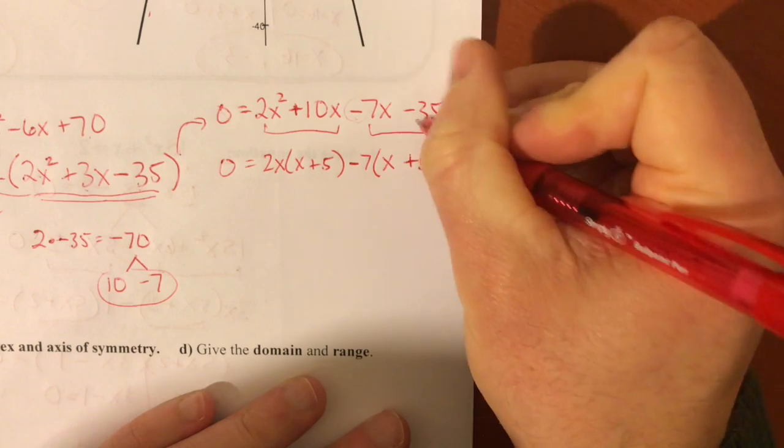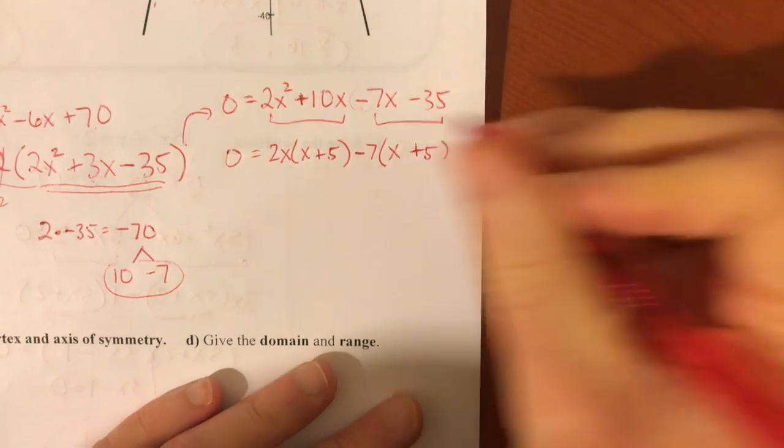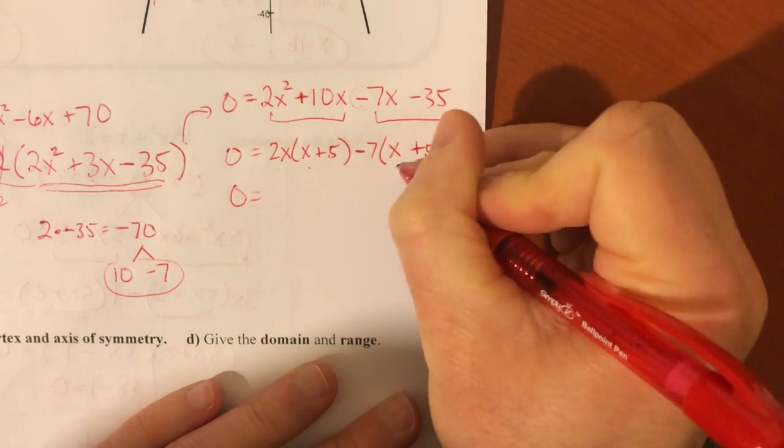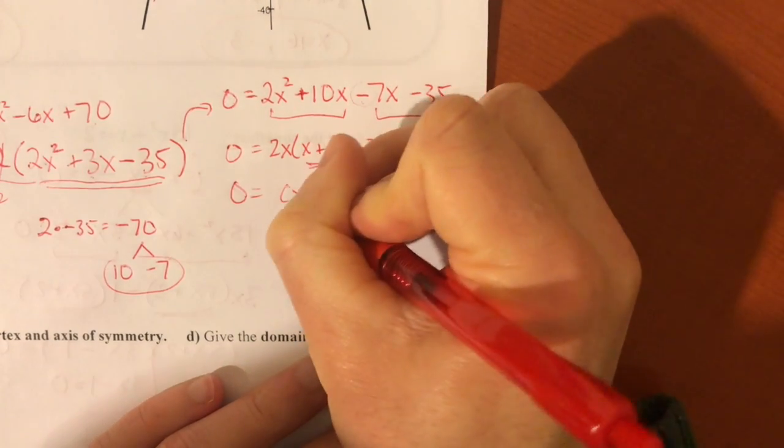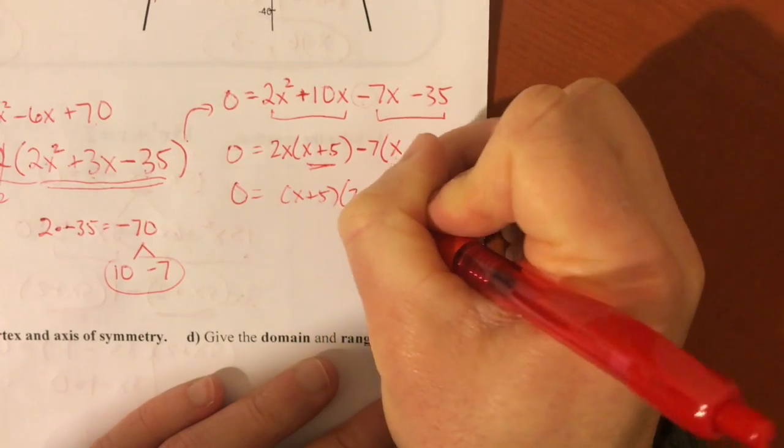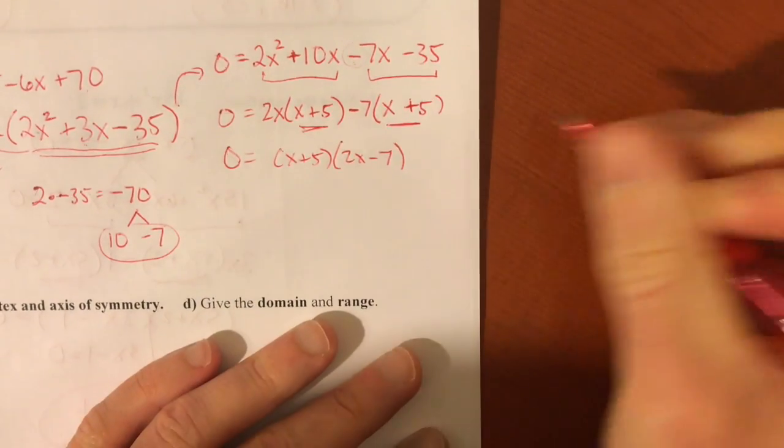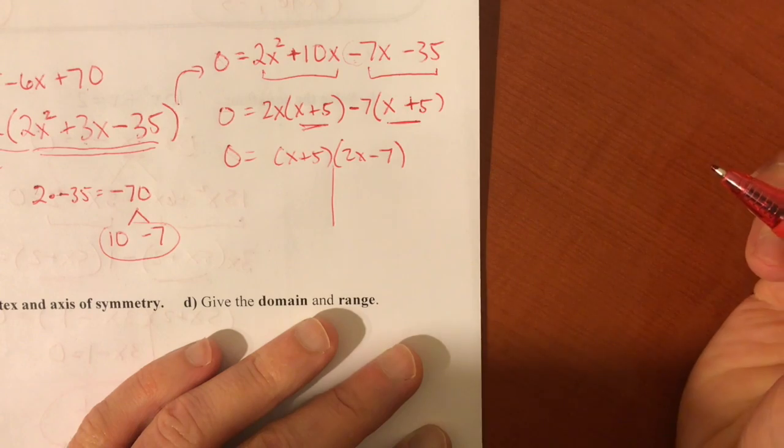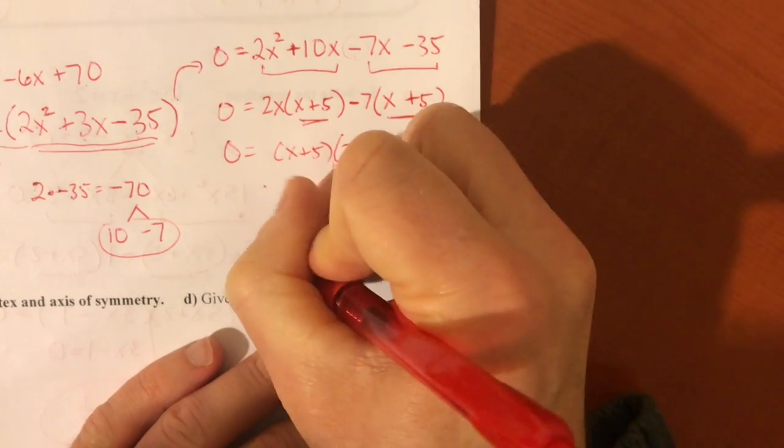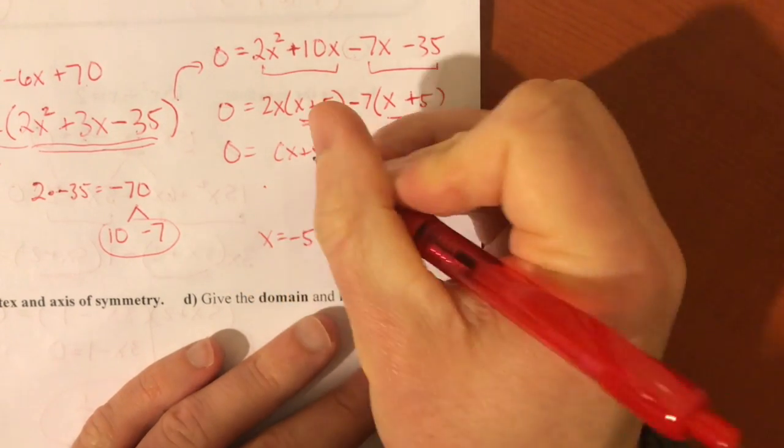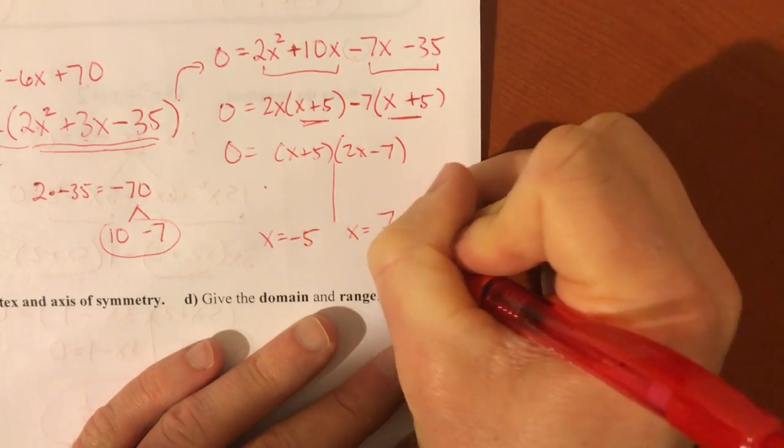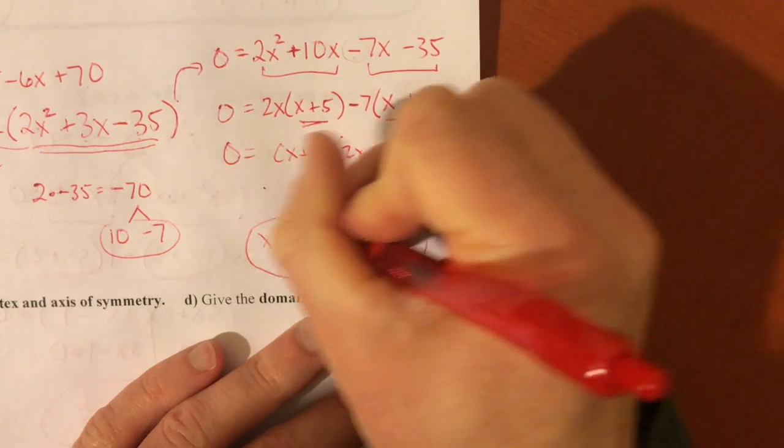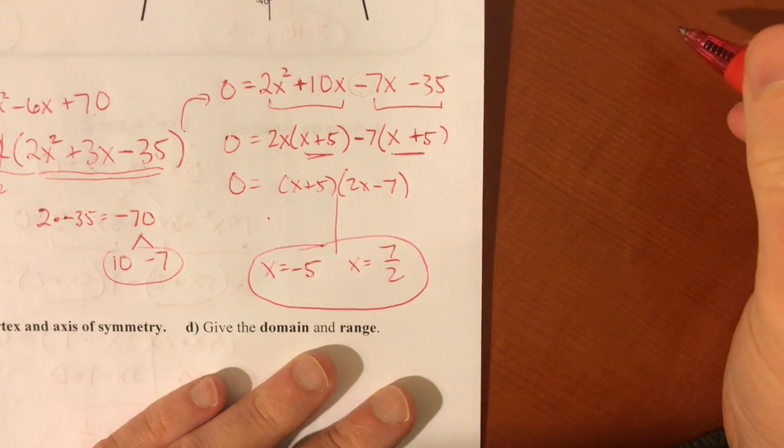And that's going to make x plus 5. Again, it's going to switch the sign out when you factor out negative out. And then there's that common factor you're looking for. If you don't have that, you did something wrong. Factor out that x plus 5. 2x minus 7 is your other factor. Set each factor equal to 0 and solve. So we'll get x equals negative 5. Add 7 divided by 2. x equals positive 7 halves. Those are your two x-intercepts.